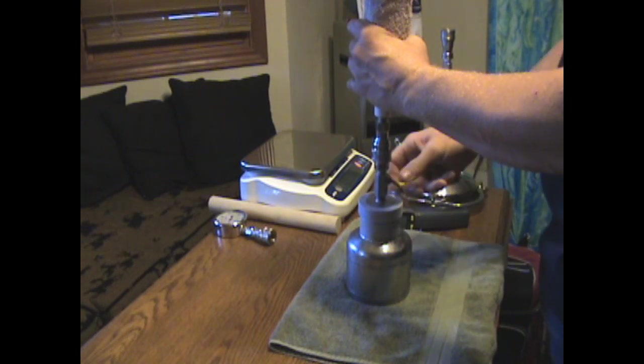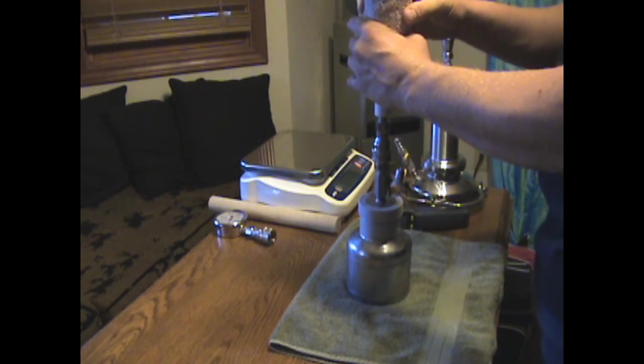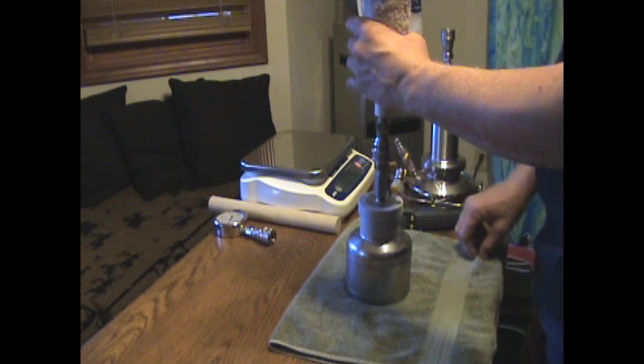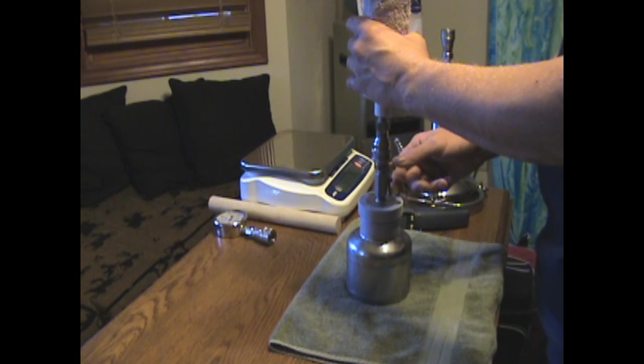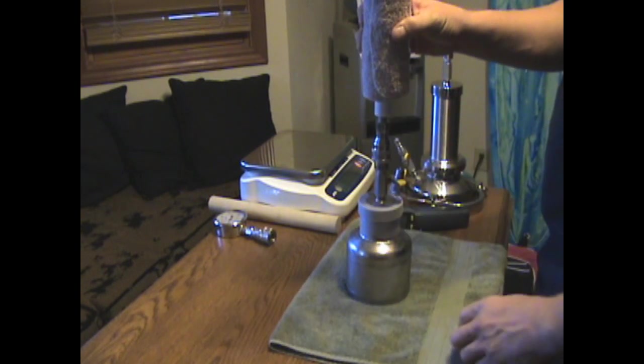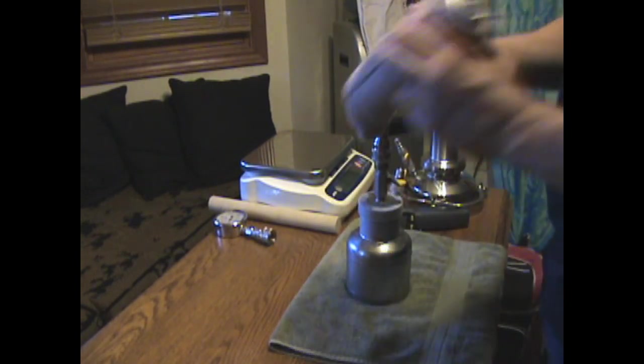So you close the ball valve. Actually first let this rest. Don't depress it anymore. Allow any liquid to flow out of this into the tank or drip out. It only takes a few seconds. Then close the ball valve. And then when you remove this you'll have less blowback. But let's do it.